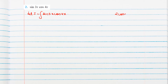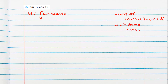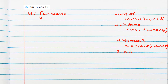We know the de-factorization formulas: 2cosA·cosB = cos(A+B) + cos(A−B); 2sinA·sinB = cos(A−B) − cos(A+B); 2sinA·cosB = sin(A+B) + sin(A−B); 2cosA·sinB = sin(A+B) − sin(A−B).